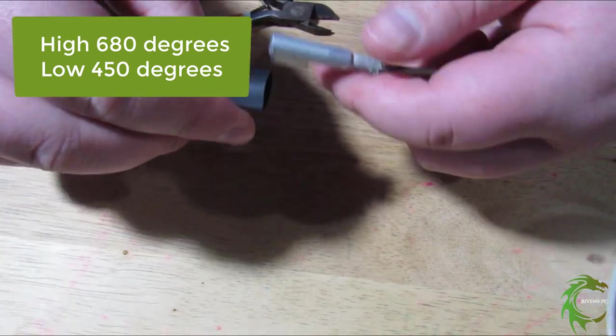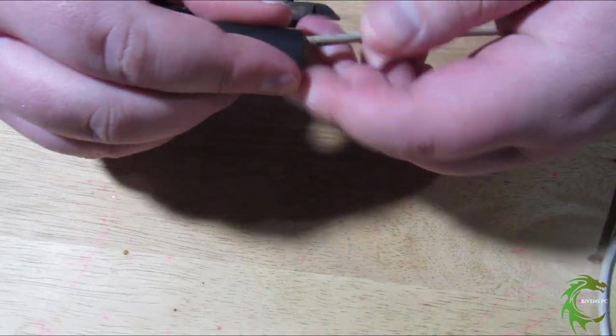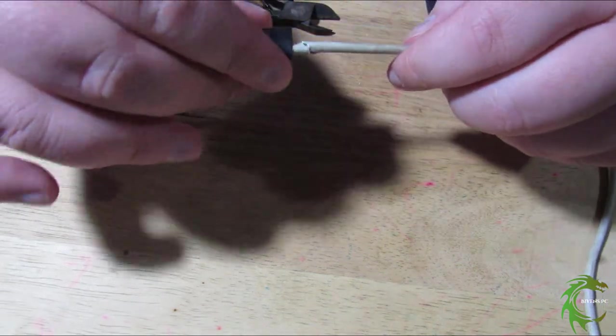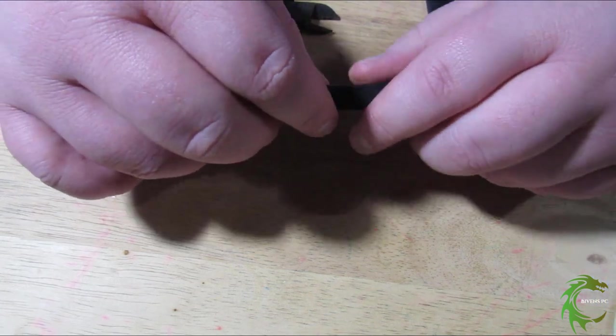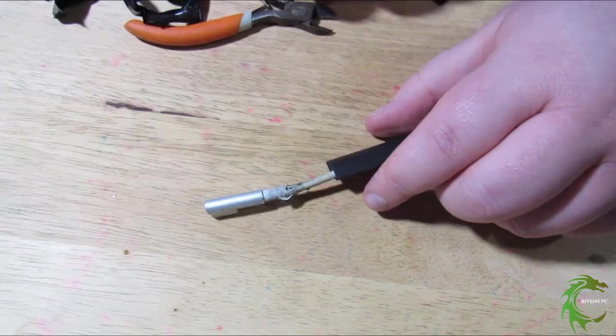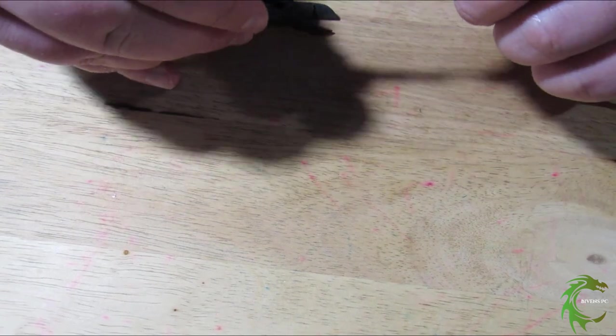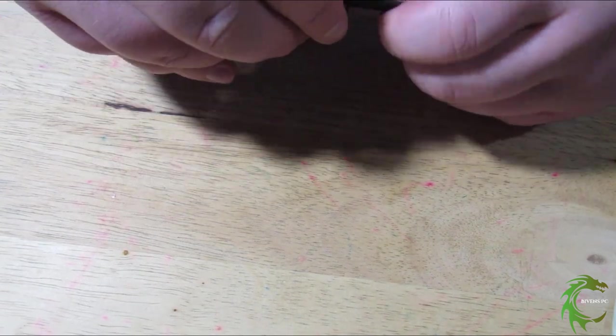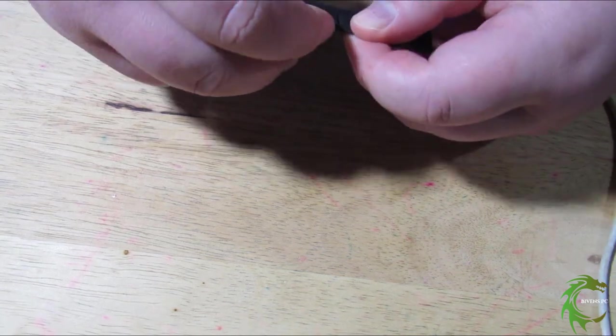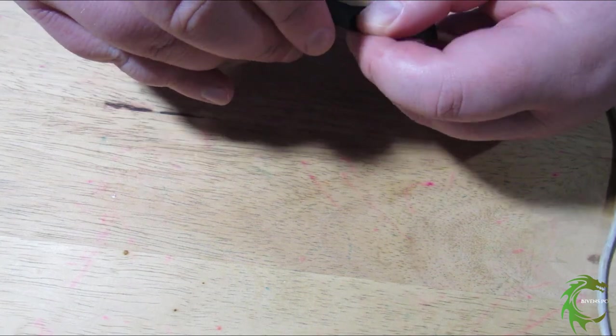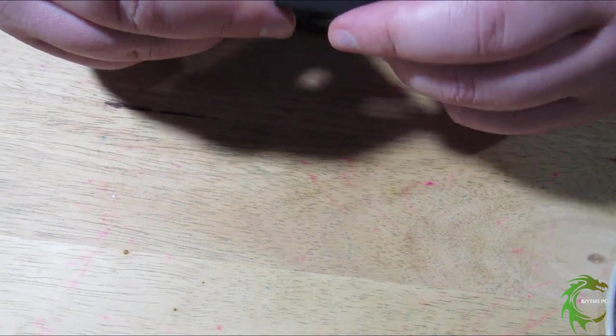Those are heat shrink tubes. They come in a couple of different sizes. I wish I had white ones but I didn't. I used two of them to go across the length. I had to use the larger ones because I had to get over that plug.